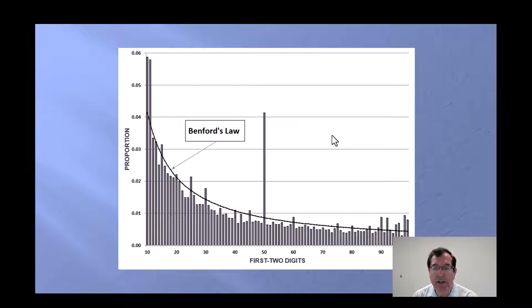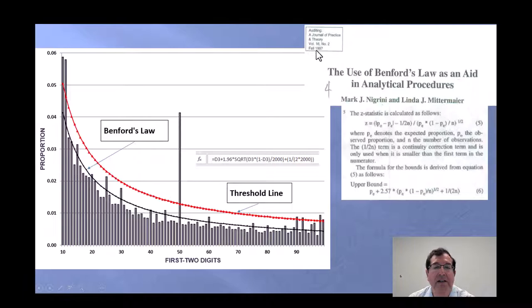How unusual is unusual? Well, I need to determine whether this spike is worth investigating. I created a threshold line. And this goes back to my 1997 publication using the Z statistic and using what is called the upper bound over here. When the number of records N increases, this answer, the upper bound, as N increases, it will decrease and get flatter and flatter. When I divide by N, the larger N, the smaller the answer will be. I worked around that. And what we have now is what we call the threshold line.